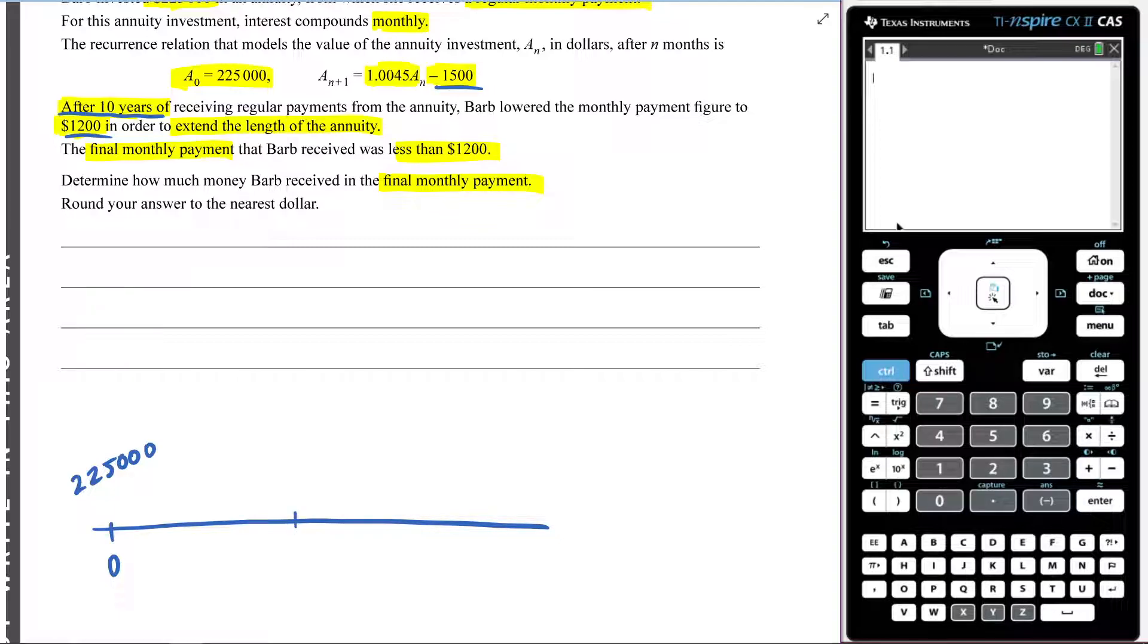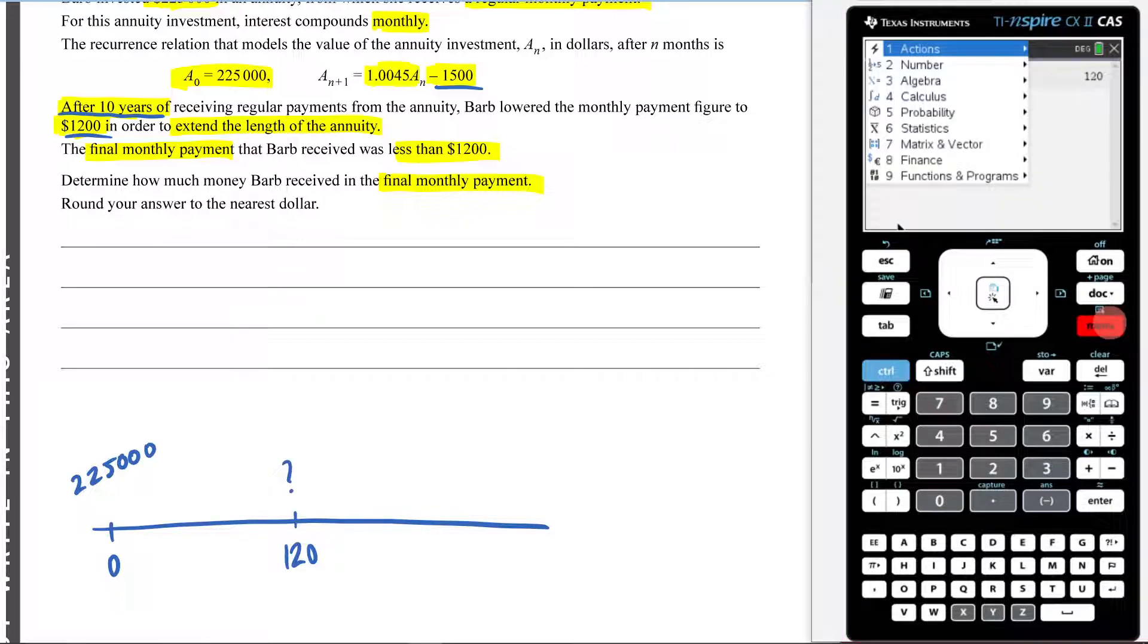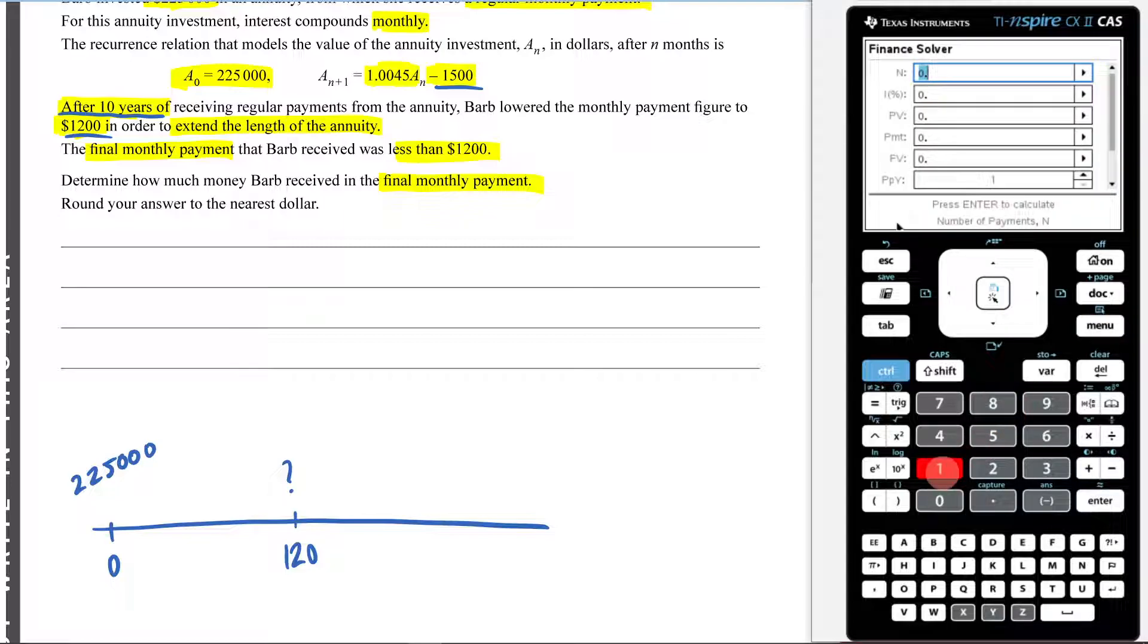Now, 10 times 12 months in a year is going to be 120 months. So how much money do I have in my annuity after 120 months? So let's use our finance solver, menu 8-1, to bring up my finance solver. So our N is 120, but then we need to stop for a moment and think about our interest rate.